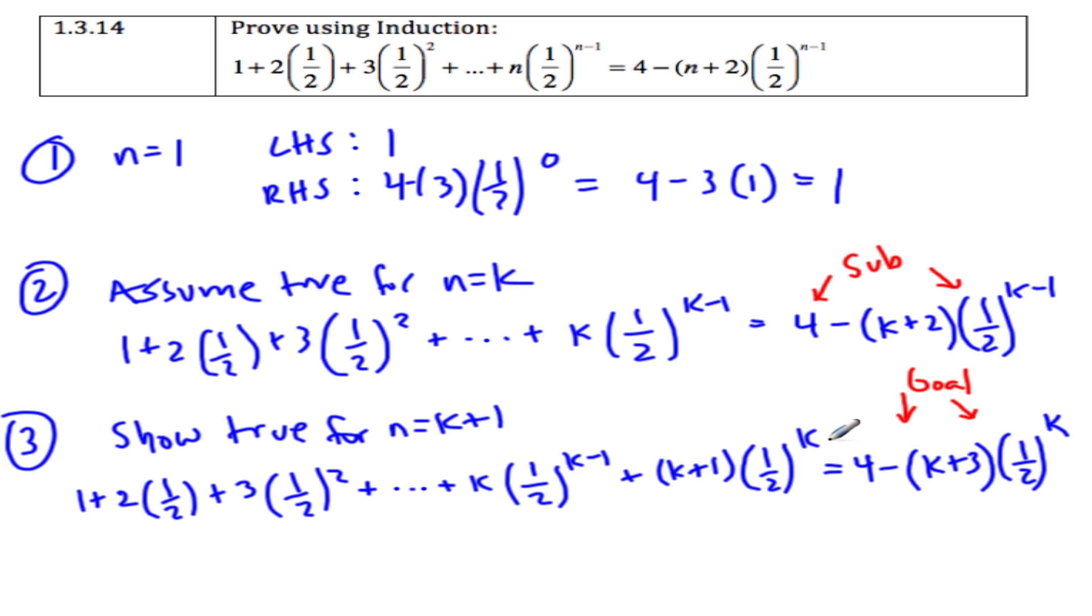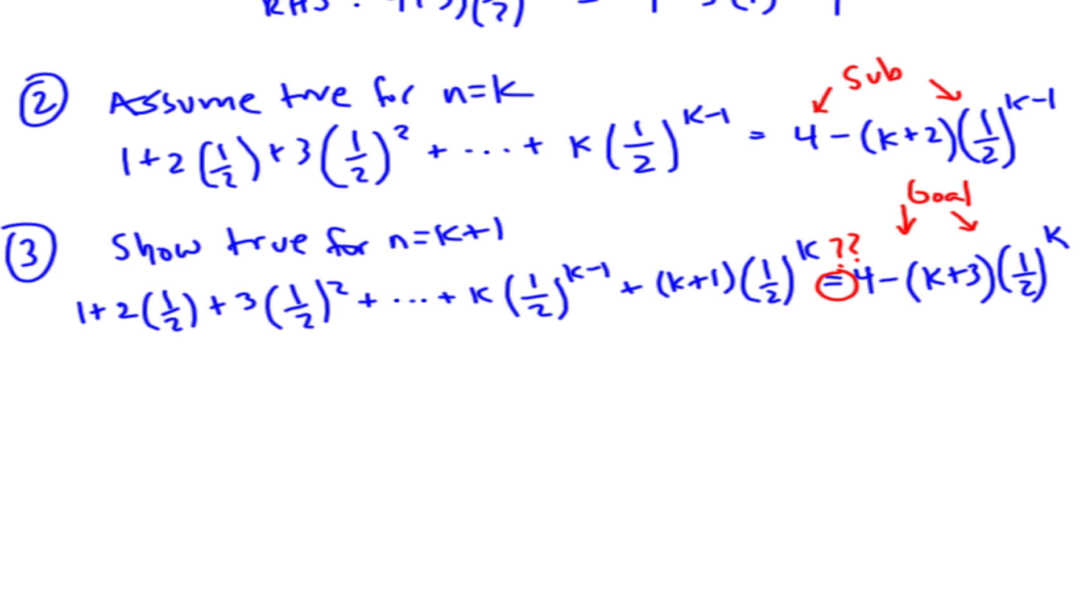And just make sure that you haven't said that they're equal. Just put some question marks above that around the equal sign. All right, step number 4, or sorry, moving on to the induction part of step number 3.